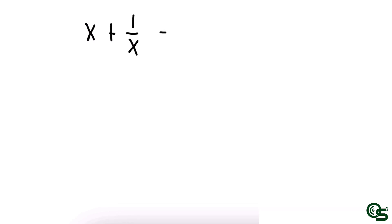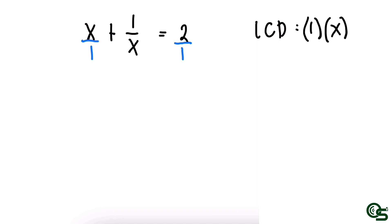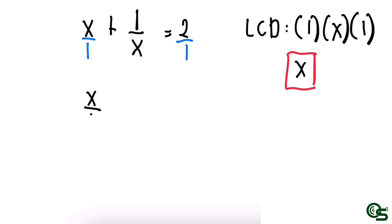Let us proceed to example number 2. The given example is (x + 1)/x = 2. First, convert the whole number 2 to fractional form: x/1 + 1/x = 2/1. Then find the LCD of the given example. The LCD of 1, x, and 1 is x.